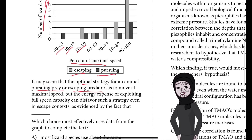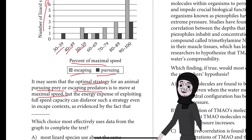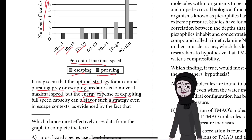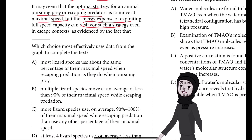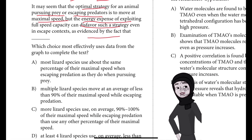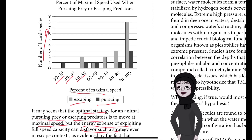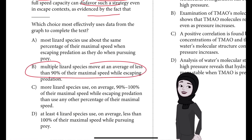Basically, whether you are pursuing prey or escaping a predator, the optimal strategy would be to move at maximal speed. But if they move at maximal speed, the energy expense will disfavor such a strategy — too much energy will get used up. So we have to fill the sentence 'as evidenced by the fact that,' finding which part of the graph shows lizards are not escaping or pursuing at their maximal speed. If you said B, well done — that's the right answer.